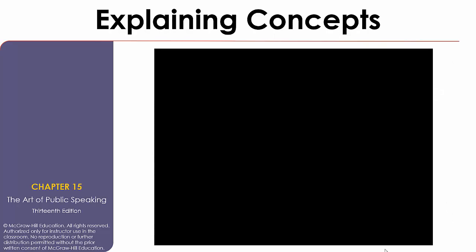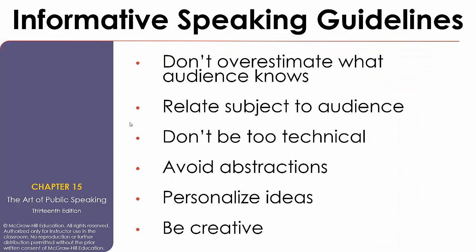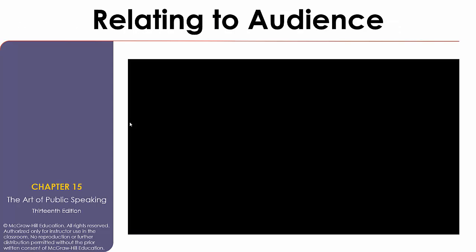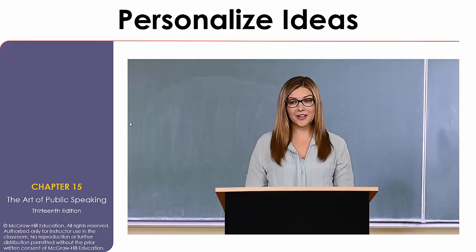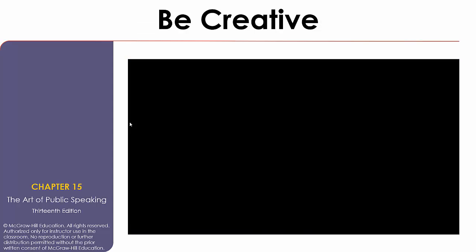From here, the chapter will go into videos which I am not going to play here — it would make this whole thing too long. I really suggest you watch them when you go through the slides themselves. When you get to informative speaking guidelines: don't overestimate what the audience knows. Just because you know it inside out does not mean your audience does. Make sure you relate the subject to your audience — give them a reason to listen. Don't be overly technical. Avoid abstractions. Personalize those ideas and be creative. You'll have example videos of relating to the audience, personalizing ideas, being creative, and a sample speech going all the way through.